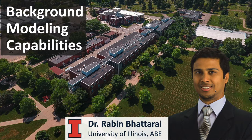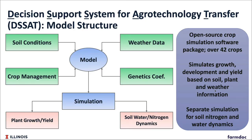Good morning, everyone. I'm going to talk about how we set up this whole simulation tool. The model is called Decision Support System for Agro Technology Transfer, which we call DSSAT. It's one of the most popularly used crop models in the domain — used all over the world in crop science and agricultural engineering. The reason it's popular is it can simulate over 42 crops, including most cash crops like corn, soybean, and wheat.